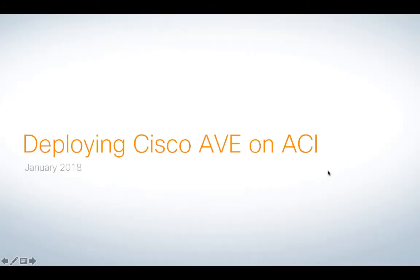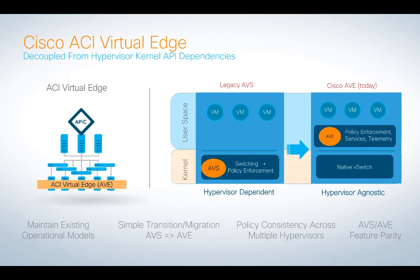Hello, in this short series, I'm going to talk about how to deploy the new Cisco AVE on ACI. If you're familiar with ACI, you've probably heard of something called AVS. AVS was our Cisco-built third-party switch that you could install into the ESX kernel and take advantage of all the features that ACI brings.